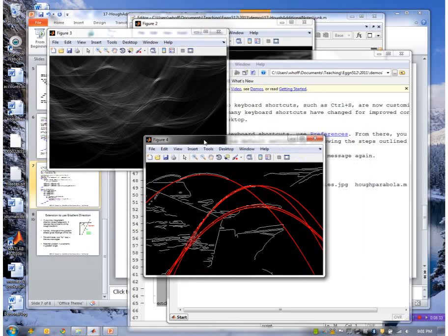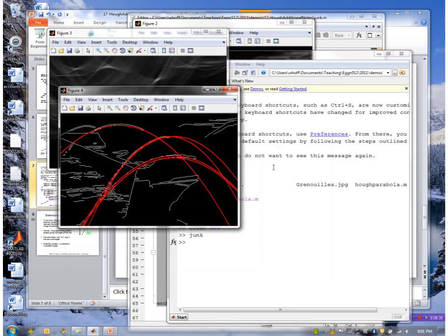This is the parabolas that were found. So there's a little one over here which probably was not found because I picked a threshold of 75. There just weren't enough points on there.